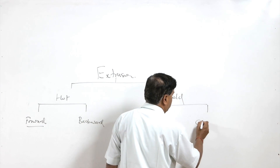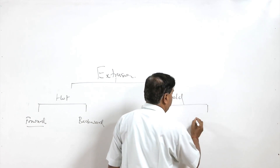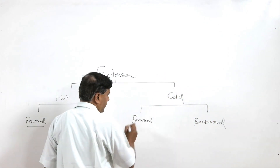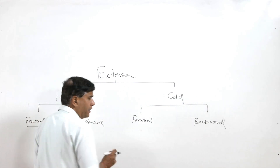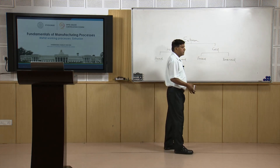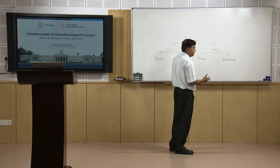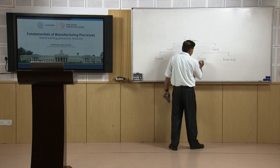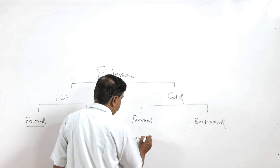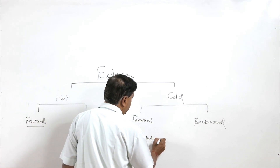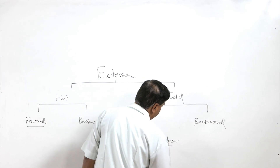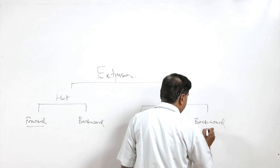In the cold extrusion category where the temperature is below the recrystallization temperature, one category of forward extrusion is hydrostatic extrusion where fluid pressure is applied through the fluid, and in backward extrusion there are two processes.